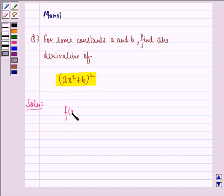Let the function f(x) be equal to (ax² + b)². Let us open the bracket first using the formula (x + y)² = x² + y² + 2xy.